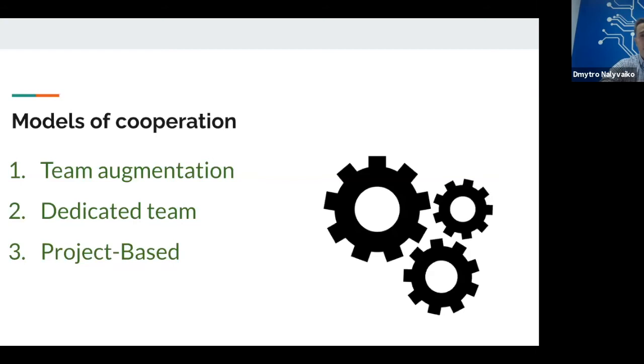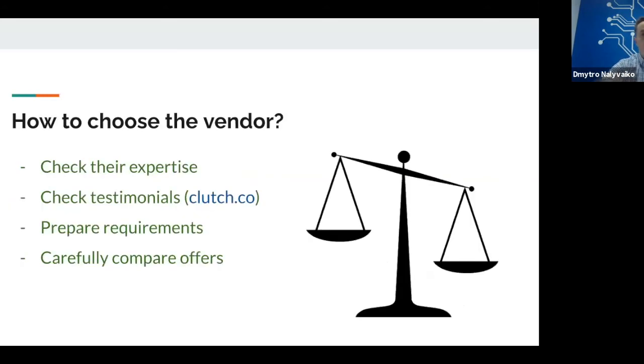On their website, vendors usually have the page with completed projects, or just Google other independent resources and check their expertise. When you check their expertise, pay attention to testimonials from their previous clients. Most vendors have separate pages on their website with those testimonials. And also, you can use independent resources. And one of the most famous is clutch.co. It's an independent resource. And on this website, clients leave feedbacks about their cooperation with different vendors, and using different filters, you can find the needed vendor and check their testimonials from previous clients.